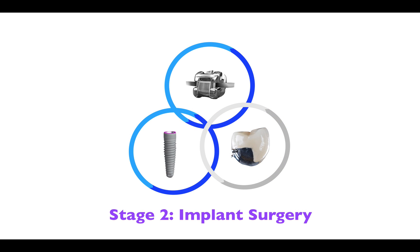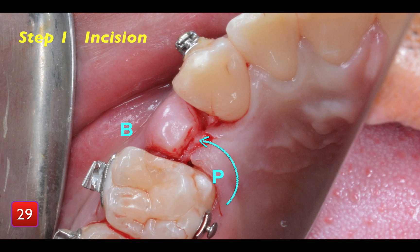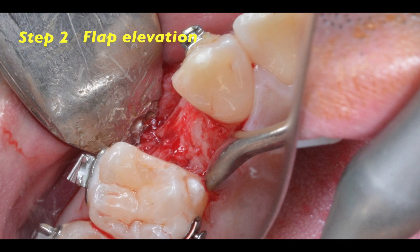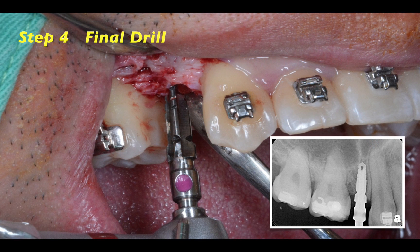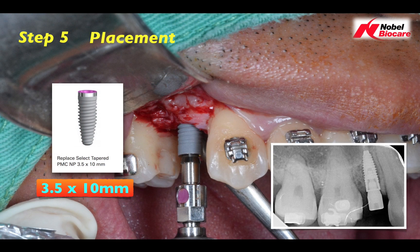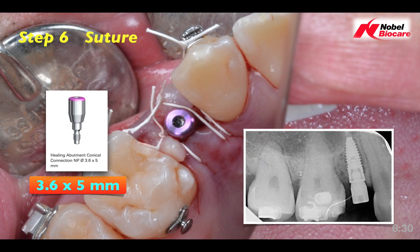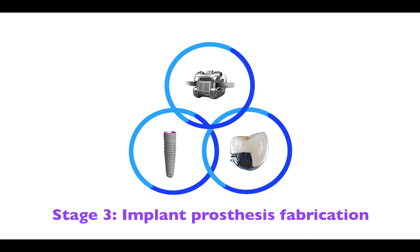Then we moved to Stage 2: implant surgery. In the beginning, an incisional line was made a little bit close to the palatal side. We elevated the flaps and exposed the alveolar bone. After drilling, we put a guide to check its parallelism, but it was too mesial. Therefore, we adjusted the position of the final drill. Then an implant fixture was placed. Finally, a healing abutment was placed and the flap was closed with number 4 cortex suture.